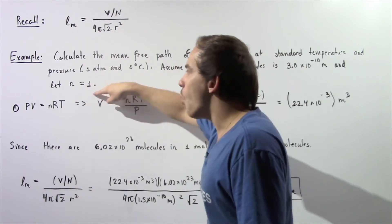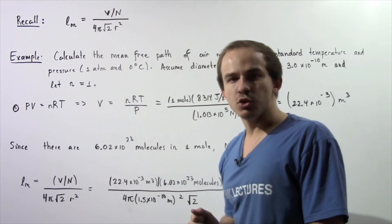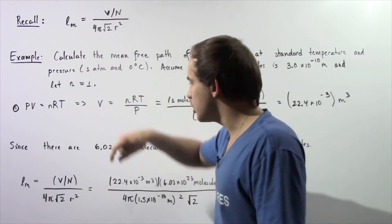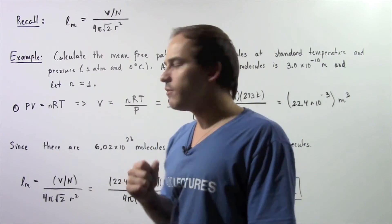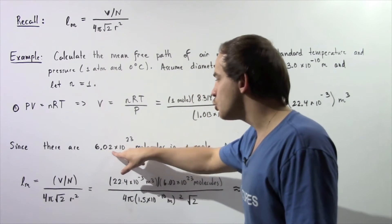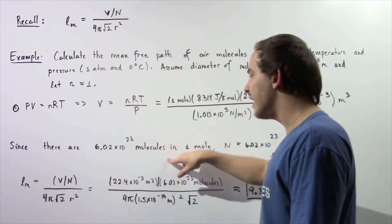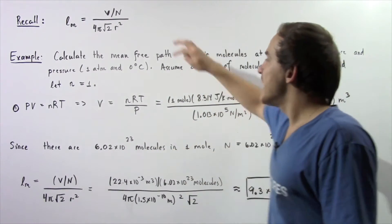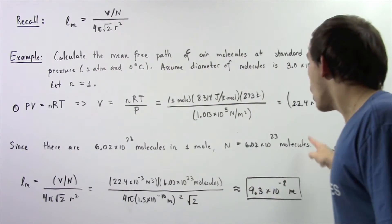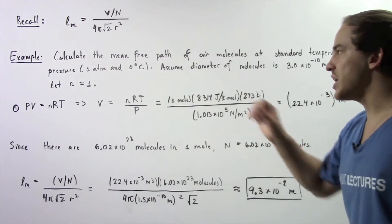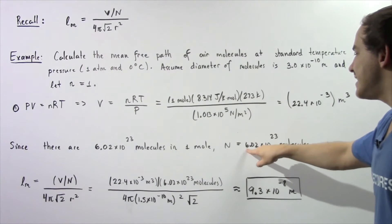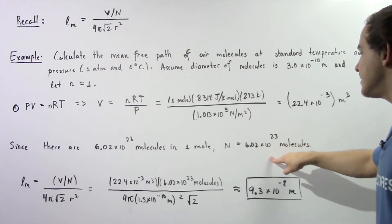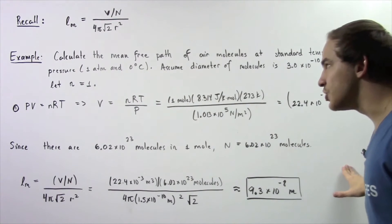Now because we have 1 mole of gas molecules, and by definition 1 mole is equivalent to 6.02×10²³ molecules, that means N, the total number of molecules in our system, is 6.02×10²³ molecules.